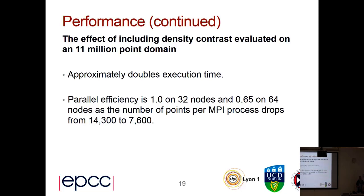Including the effect of density contrast means that computations take approximately twice as long. Combined with the increase in domain size, the parallel efficiency on 64 nodes is pushed up, as you would expect, because you're doing more computation relative to the amount of communication, and you have more domain points per MPI process.